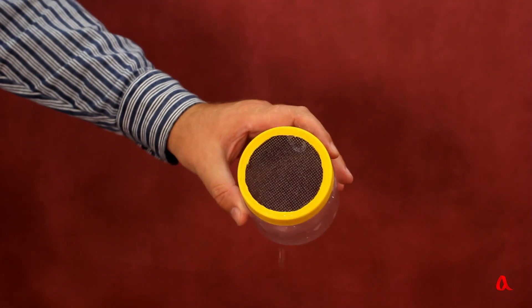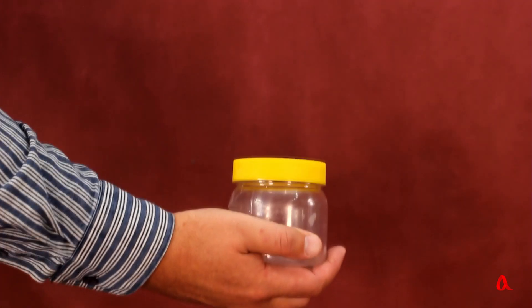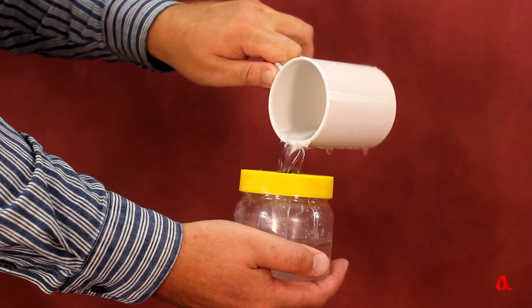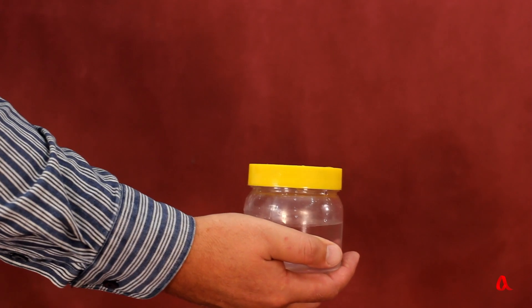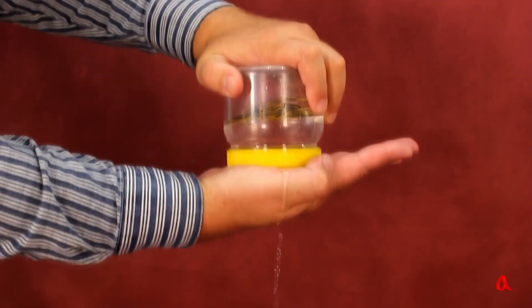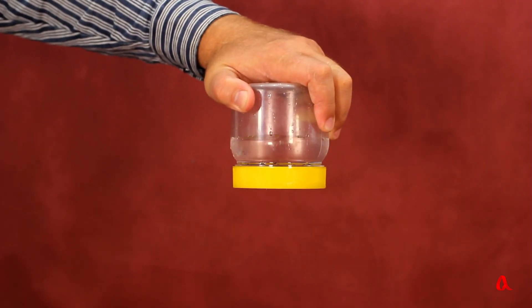Let's carry out another experiment. We cover a jar's neck with a fine mesh and pour some water into the jar through the mesh. It runs in effortlessly. Now we cover the jar with a hand and turn it upside down. The mesh prevents the water from running out of the jar.